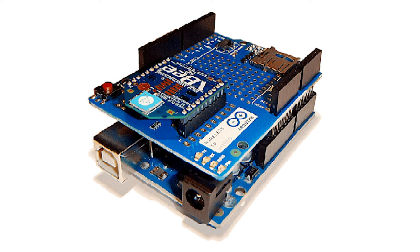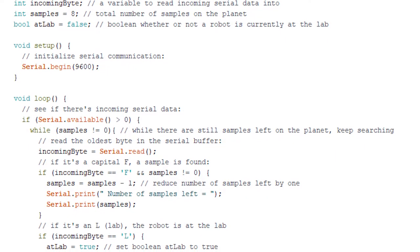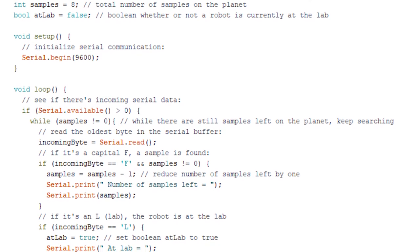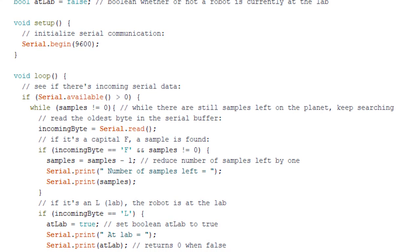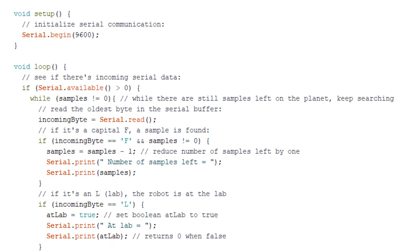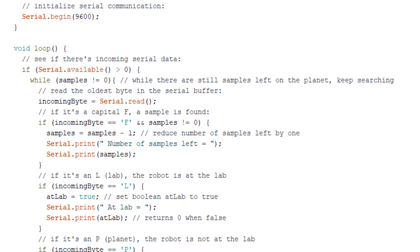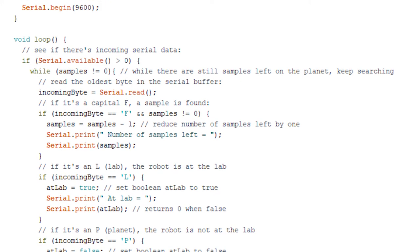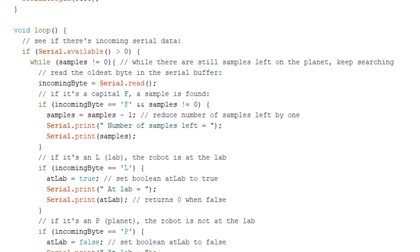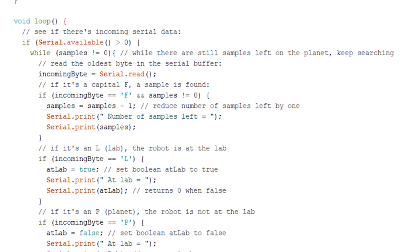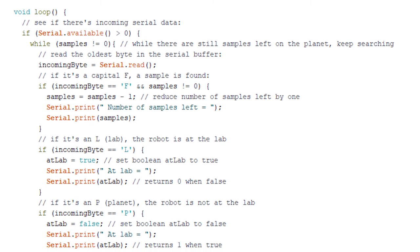The second thing that the robots communicate is whether or not they are currently at the lab. This will prevent that both robots will be present at the lab simultaneously. Here you can see the basic idea of the code that we use for receiving the data via Zigbee. Whenever a robot enters the lab, leaves the lab, or picks up a sample, it will send a specific character via Zigbee. This will then be received by the other robot, which will then perform and execute the right action.